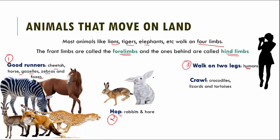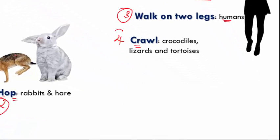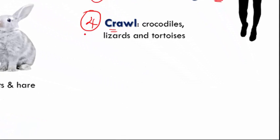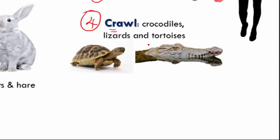The next type are animals which crawl. Examples include crocodiles, lizards, and tortoises, which have very short limbs. Because their limbs are so short, they can't really run and instead have to crawl on land.